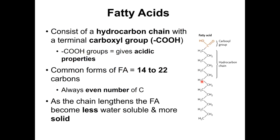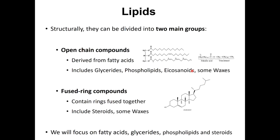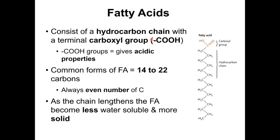The building blocks of open chain compounds are fatty acids. Fatty acids are basically long hydrocarbons — like the one shown on the right — containing an even number of carbons, between 14 and 22 carbons, which at the end present a carboxyl group on the last terminal carbon. The numbering of fatty acids always starts from the end of the tail, not from the carboxyl group.